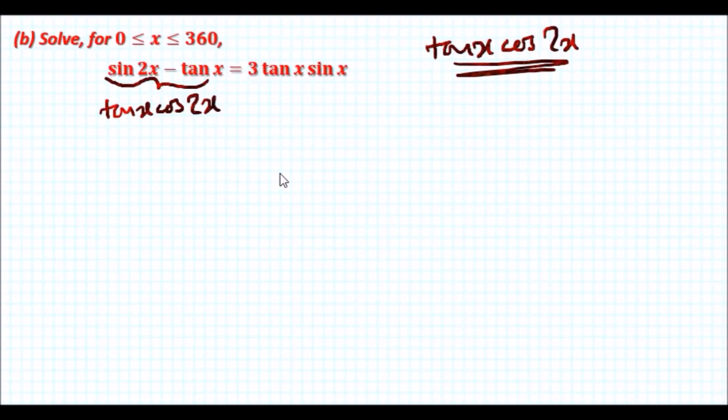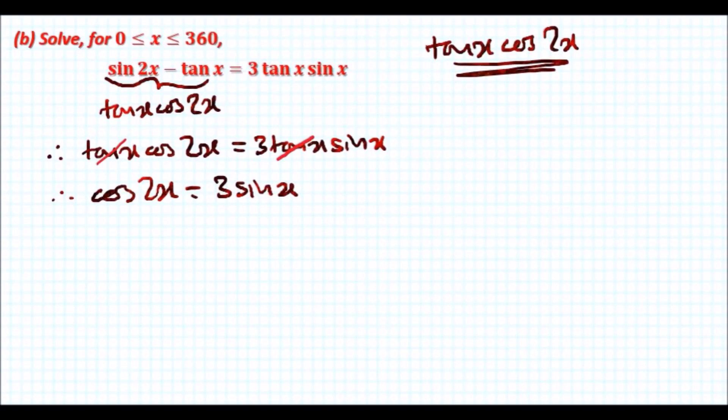Doing this we can instantly notice that instead of looking at both sides we can see that they both have a tan x which can be cancelled out and we'll be left with just two terms: a 3 sin x and cos 2x. So let's rewrite again: tan x cos 2x equals 3 tan x sin x.